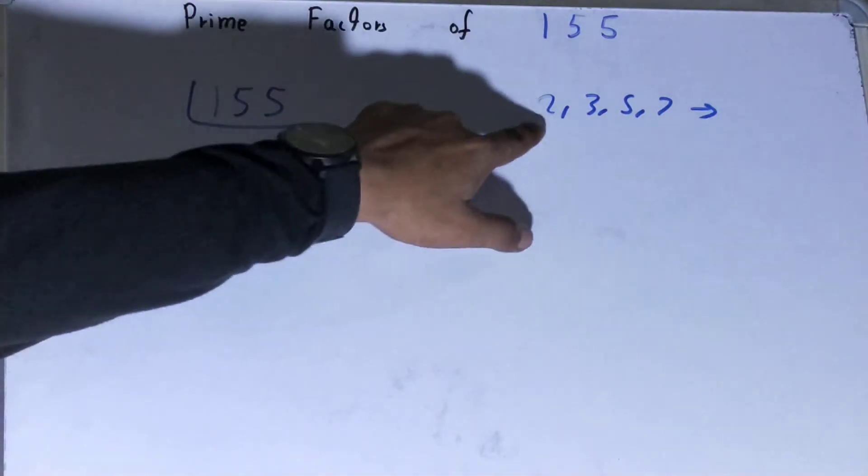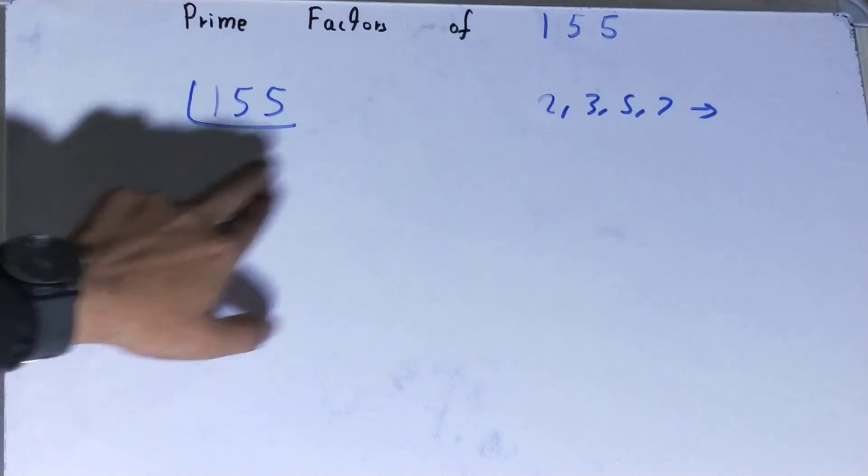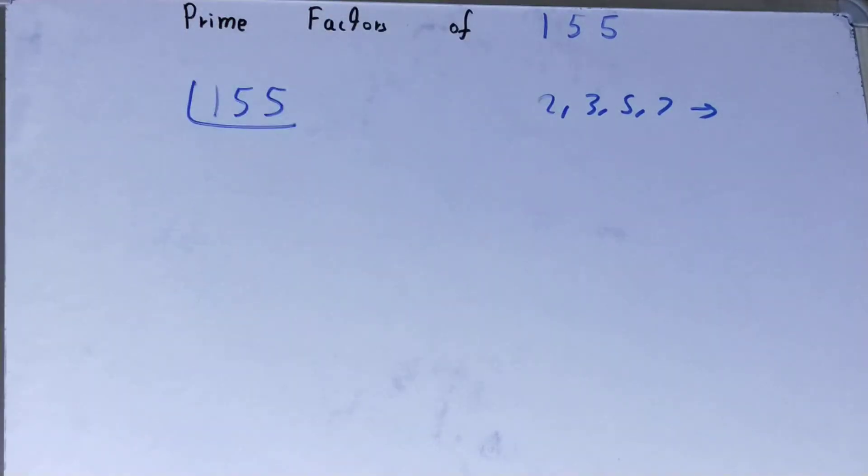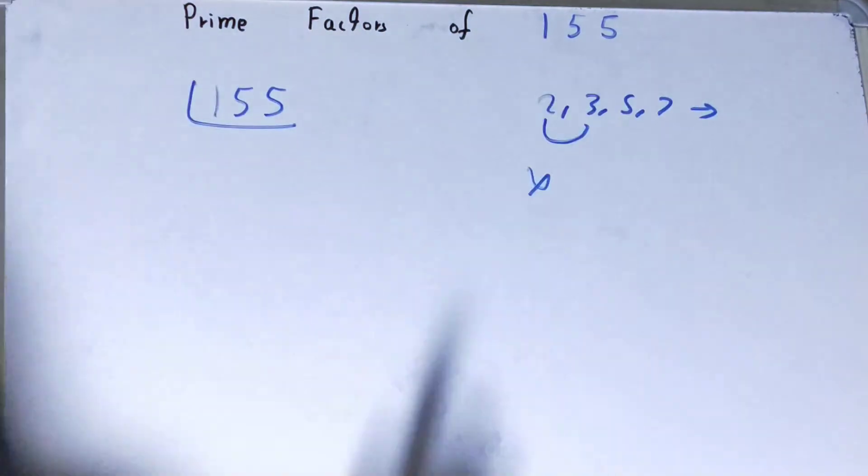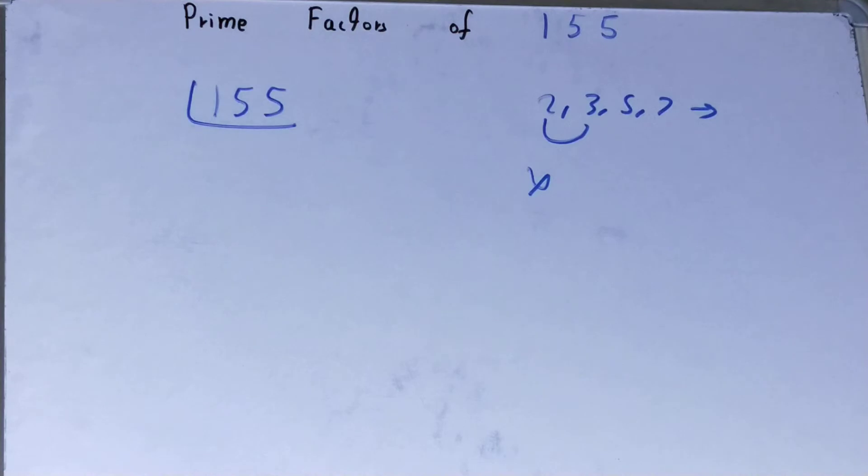Is this 155 divisible by 2? Clearly not, because 155 is an odd number. So we'll go to the next lowest prime number, that is 3. Is 155 divisible by 3? No, it is not.